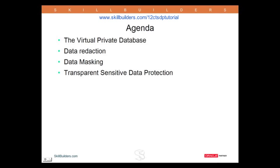First, I'm going to go through the Virtual Private Database. Virtual Private Database is also known by several other acronyms. Some people like to refer to it as row-level security. Other people use fine-grained access control, so VPD, RLS, FGAC. Powerful facility.